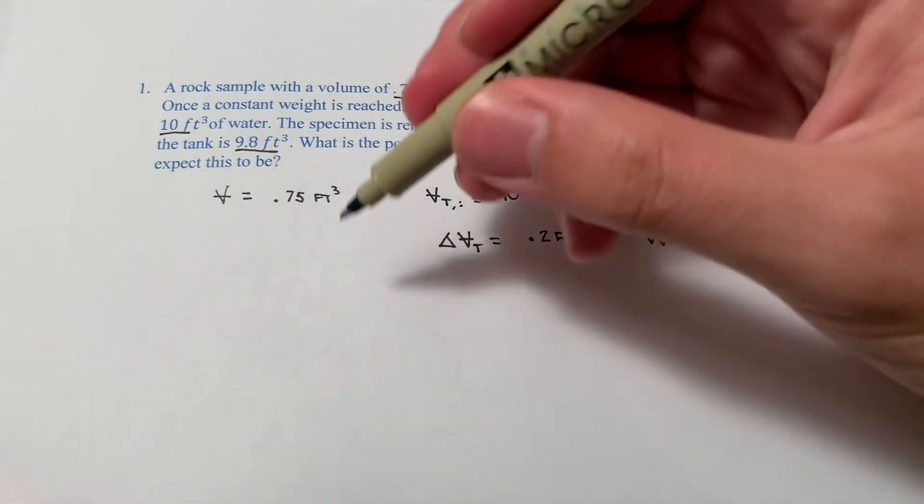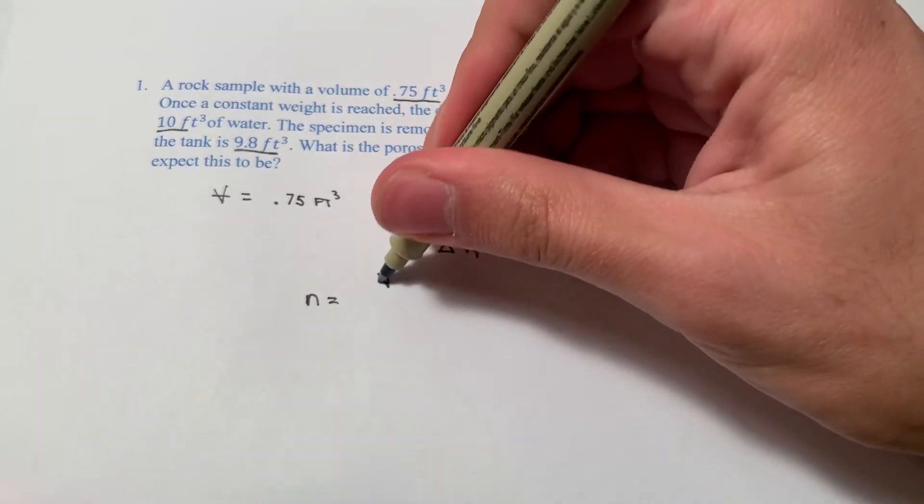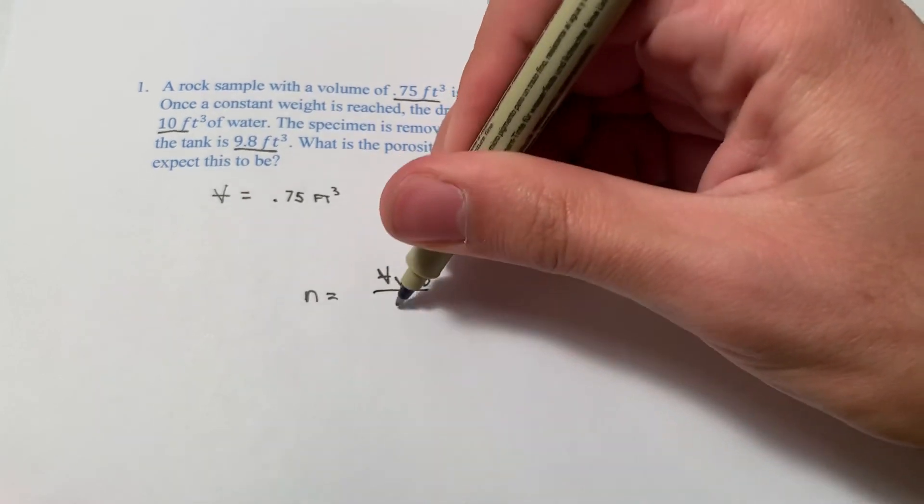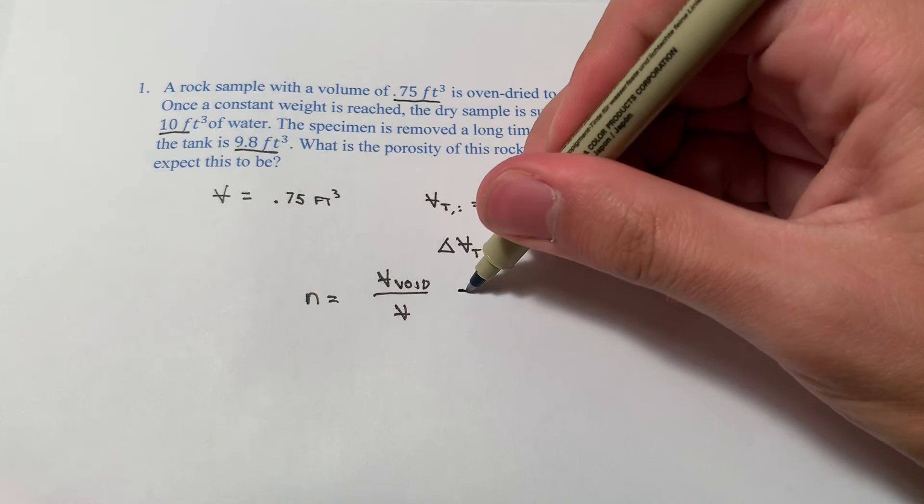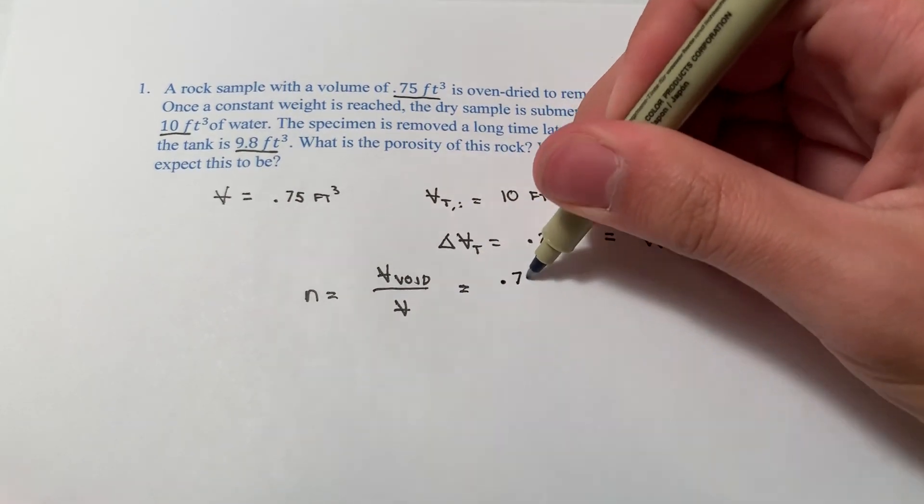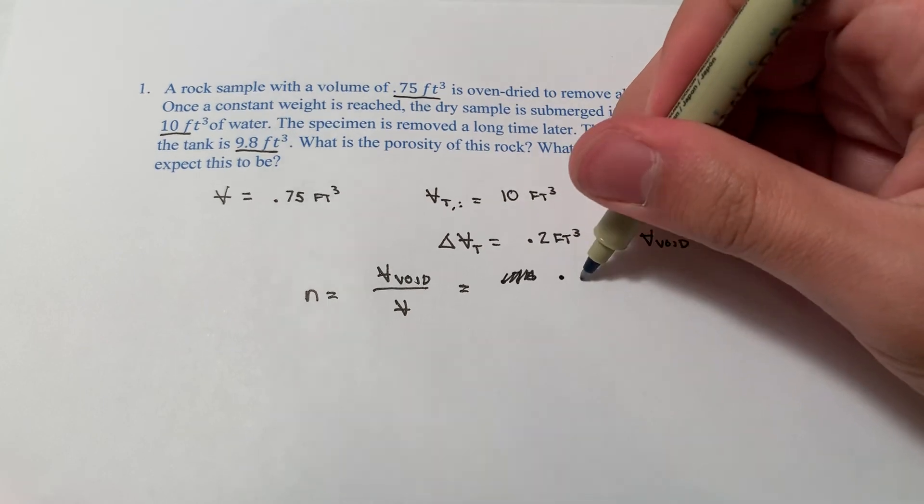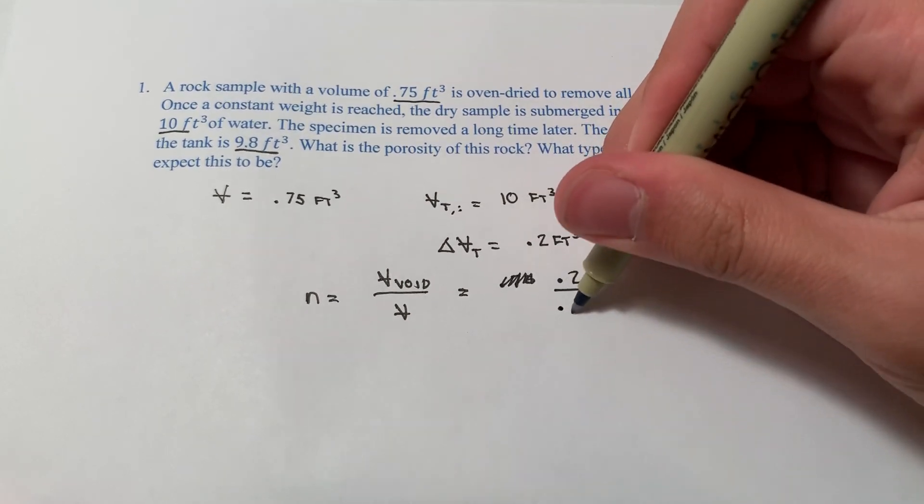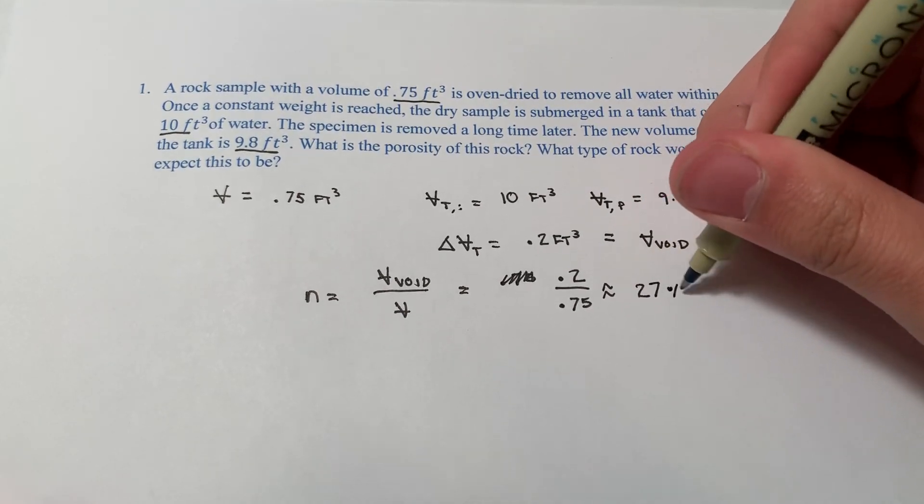So then, remember that equation. N is equal to the volume of the void space, which we have, divided by the total volume, which we have. So that's going to be equal to 0.75. Excuse me. It's going to be equal to 0.2 divided by 0.75, which is about equal to 27%. So that's the porosity of this rock.